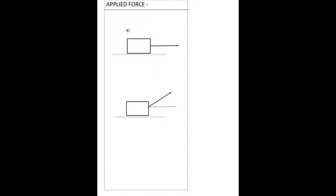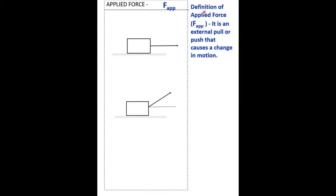Let me start with applied force, or F-app. The definition of applied force is an external pull or push that causes a change in motion. For example, here we have a box over a flat surface being pulled by an applied force. In this first case, the F-app is parallel to the horizontal surface.